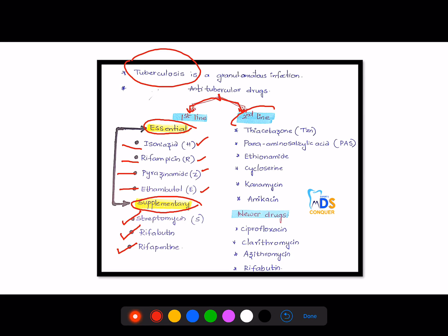And this second-line of drugs includes thioacetazone, para-aminosalicylic acid, ethionamide. Don't confuse between ethionamide and ethambutol. Ethambutol is first-line, whereas ethionamide is second-line. Then cycloserine, kanamycin, and amikacin. There are newer drugs like ciprofloxacin, clarithromycin, azithromycin, rifabutin, which is also used as a supplementary drug in the first-line.